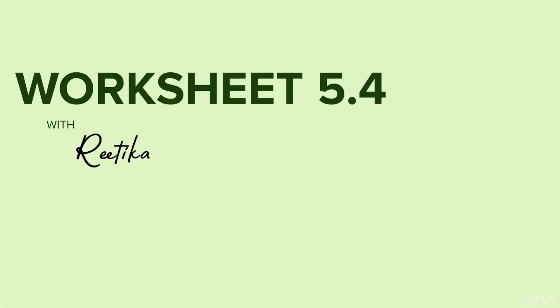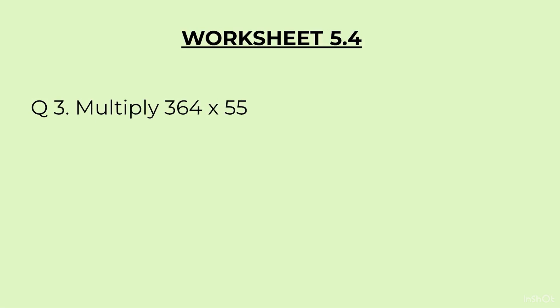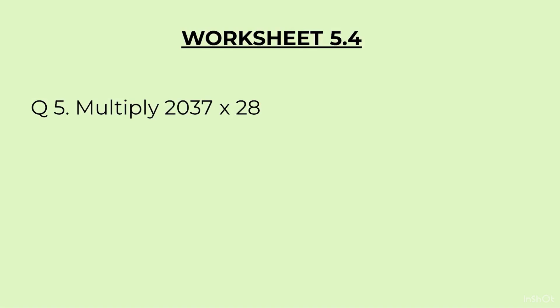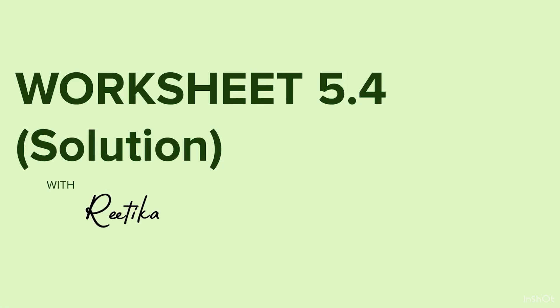Now we are ready for our worksheet — Worksheet 5.4. Question 1: Multiply 57 × 49. Question 2: Multiply 196 × 23. Question 3: Multiply 364 × 55. Question 4: Multiply 1722 × 36. Question 5: Multiply 2037 × 28. Students, pause the video here, take time to solve these questions, and only then look at the solutions.